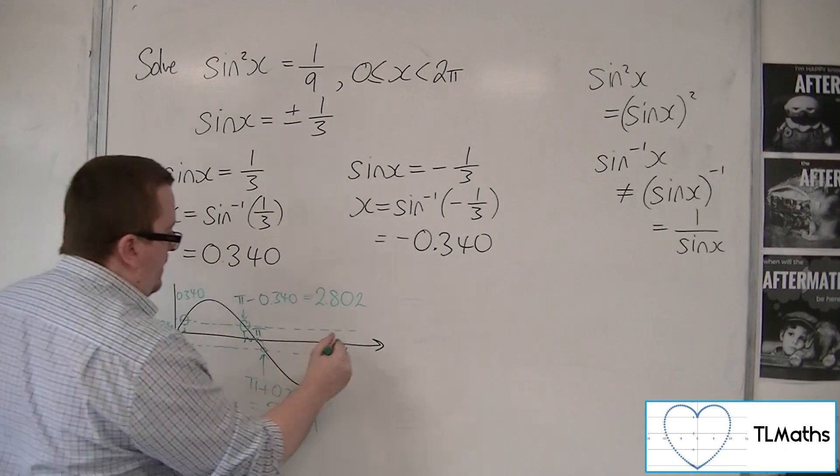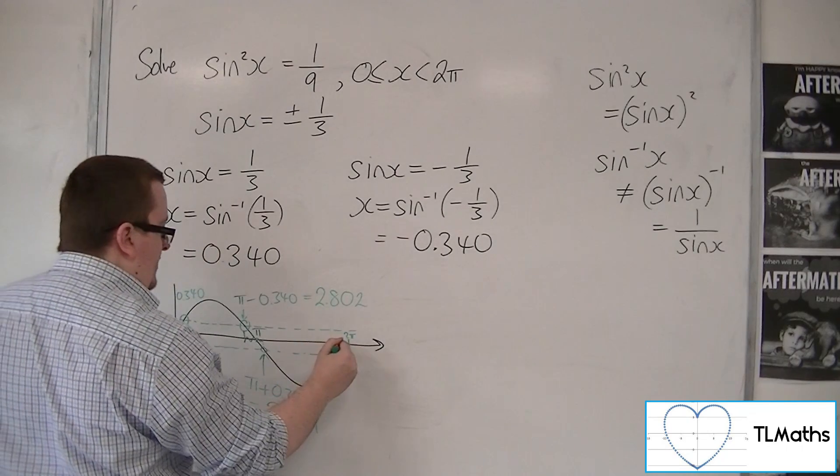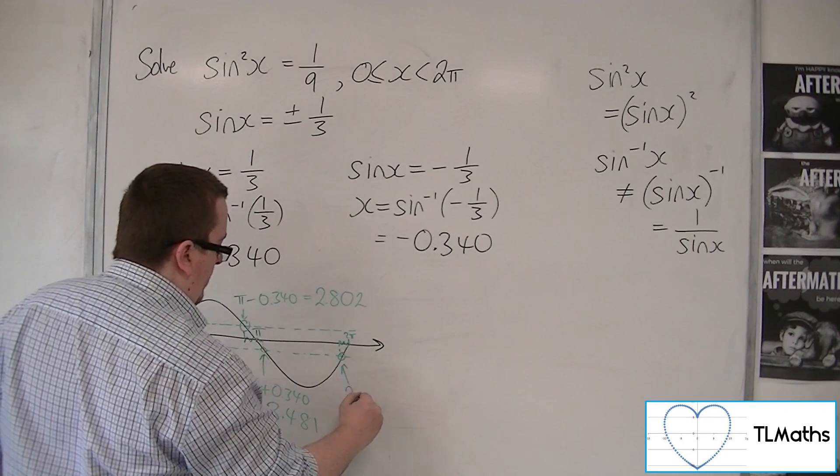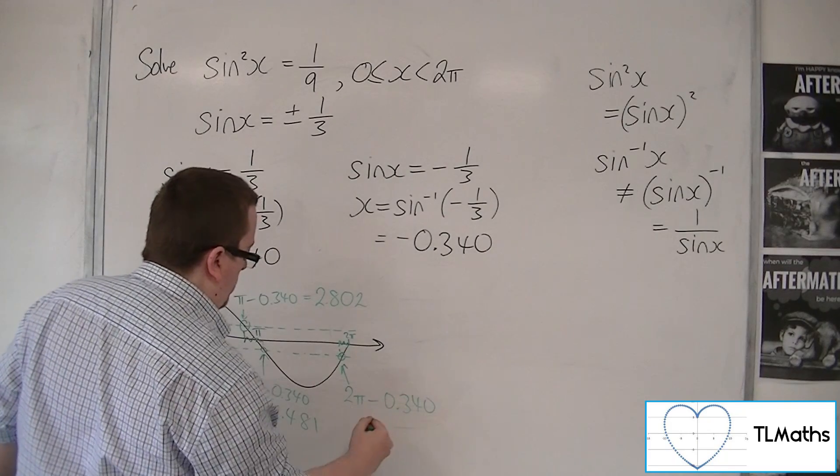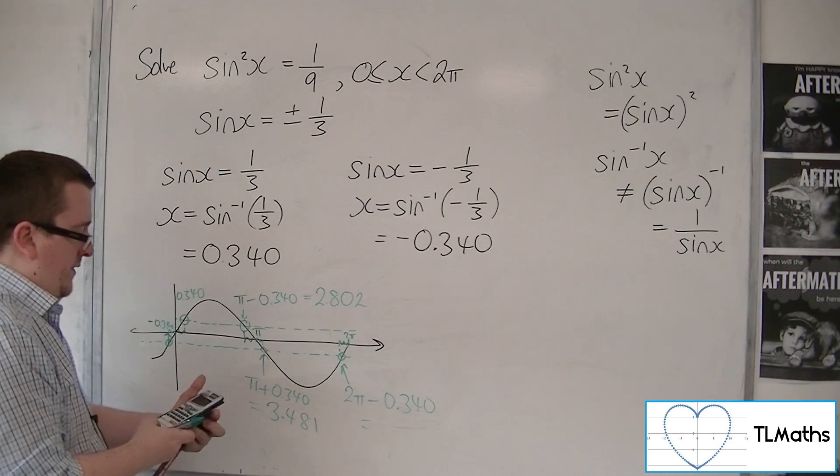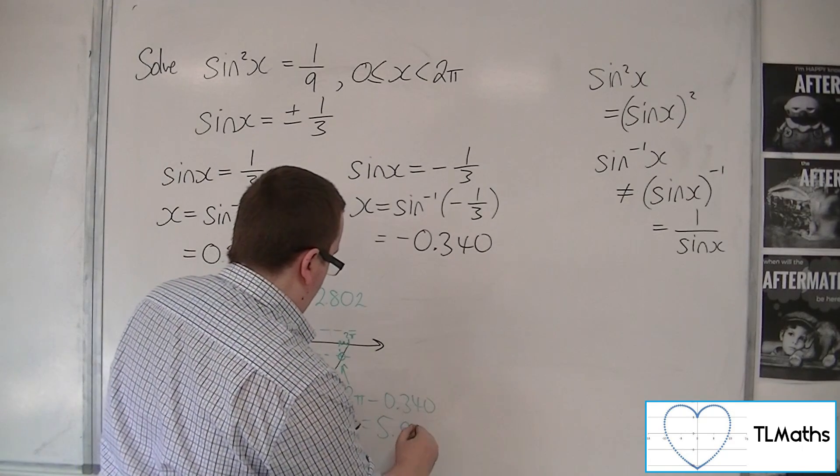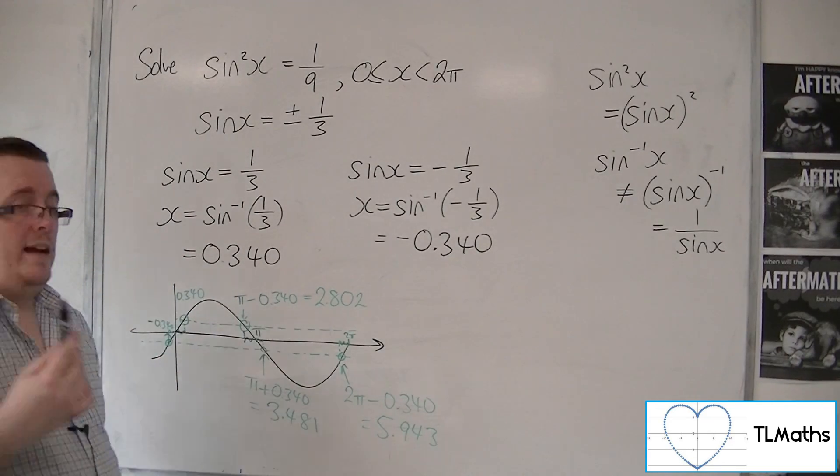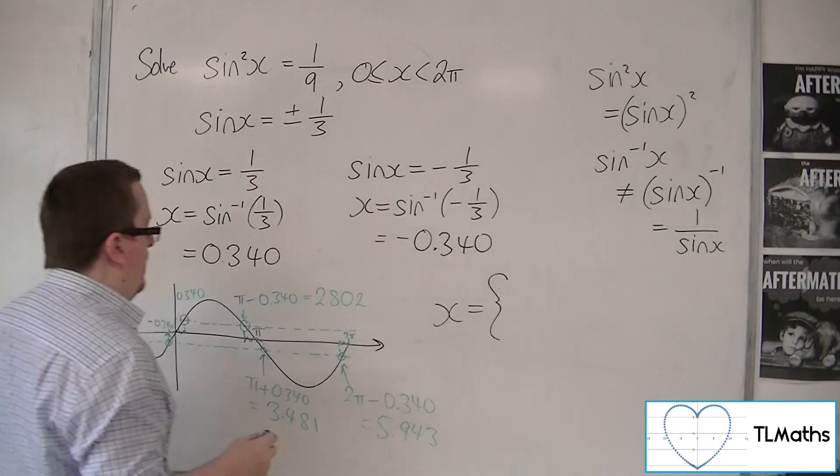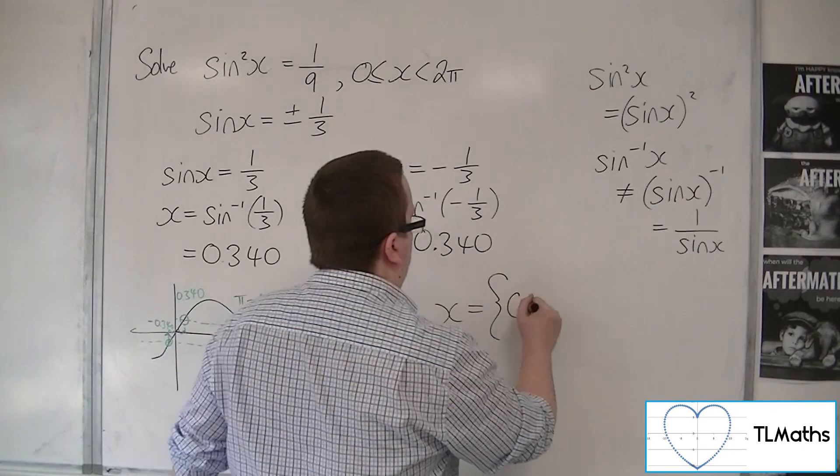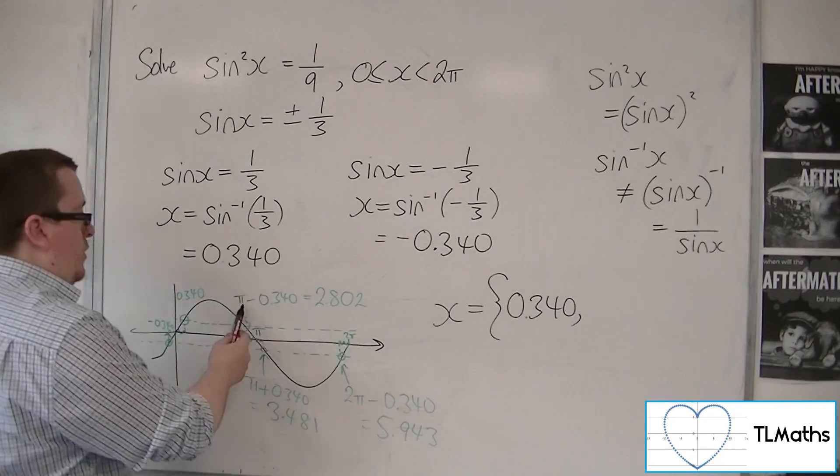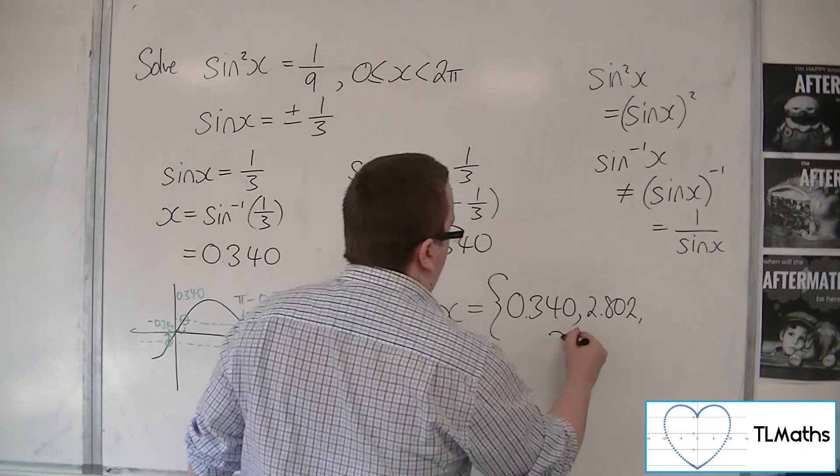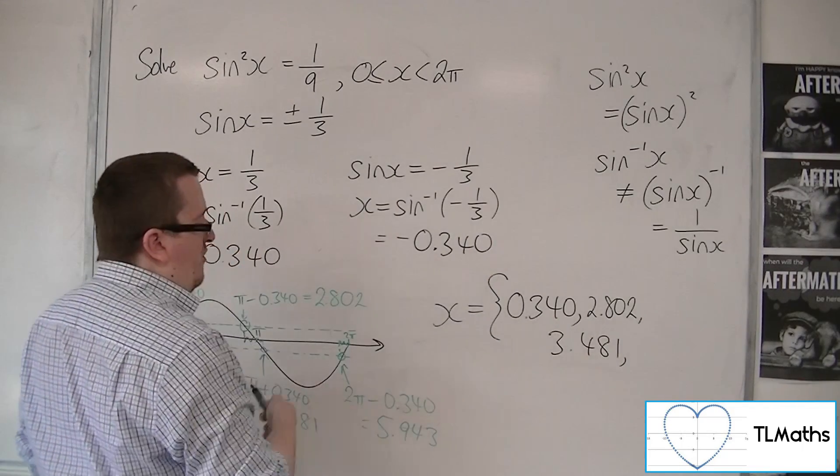Now that point there is 2π. So this distance is exactly the same as all the other ones. So this one I can find by doing 2π take away 0.340. So 2π take away the answer key is 5.943 to 3 decimal places. I actually have 4 solutions to the original problem. I've got the 0.340, I've got the 2.802, I've got the 3.481, and the 5.943.